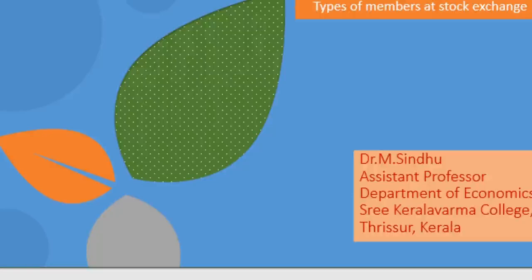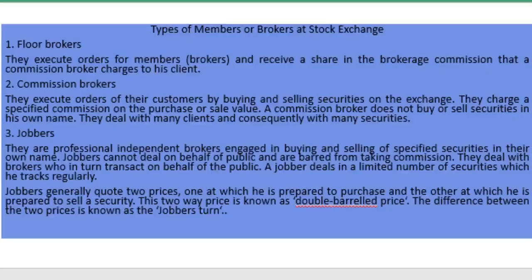Welcome. Today we will discuss the types of members at a stock exchange. There exist different types of members, and trading can be done through authorized members or brokers who are members that deal in stock exchanges.